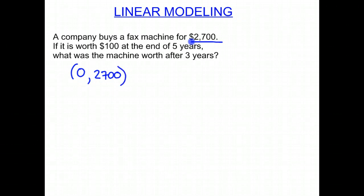So our independent variable, x, is time, and our dependent variable, y, is money. Because how much it's worth depends on how old it is.